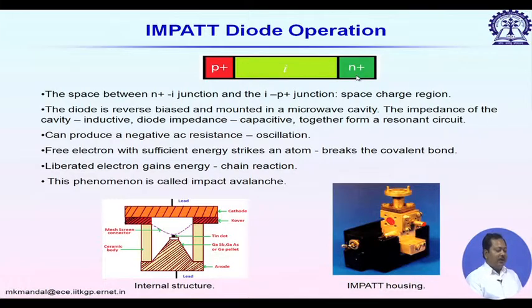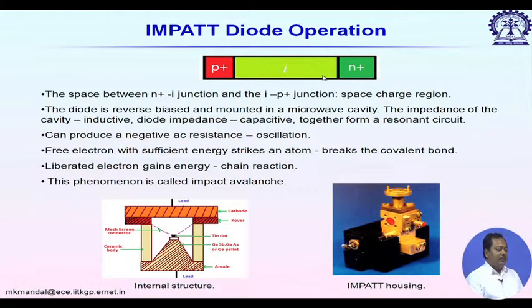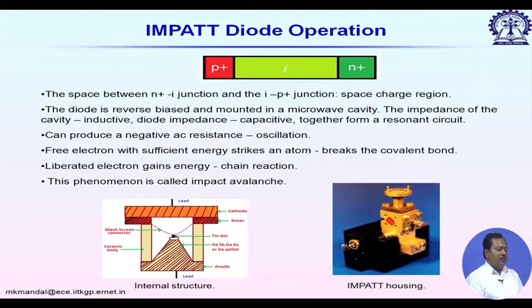Once electron-hole pairs are generated, holes drift through the i-region and are collected by the p+ region. There is a typical transit time to collect these holes, since they take a finite time to traverse the i-region. This transit time depends on the length of the i-region. A typical IMPATT diode housing provides capacitive reactance, which is nullified by inductive reactance obtained using a bonding wire.